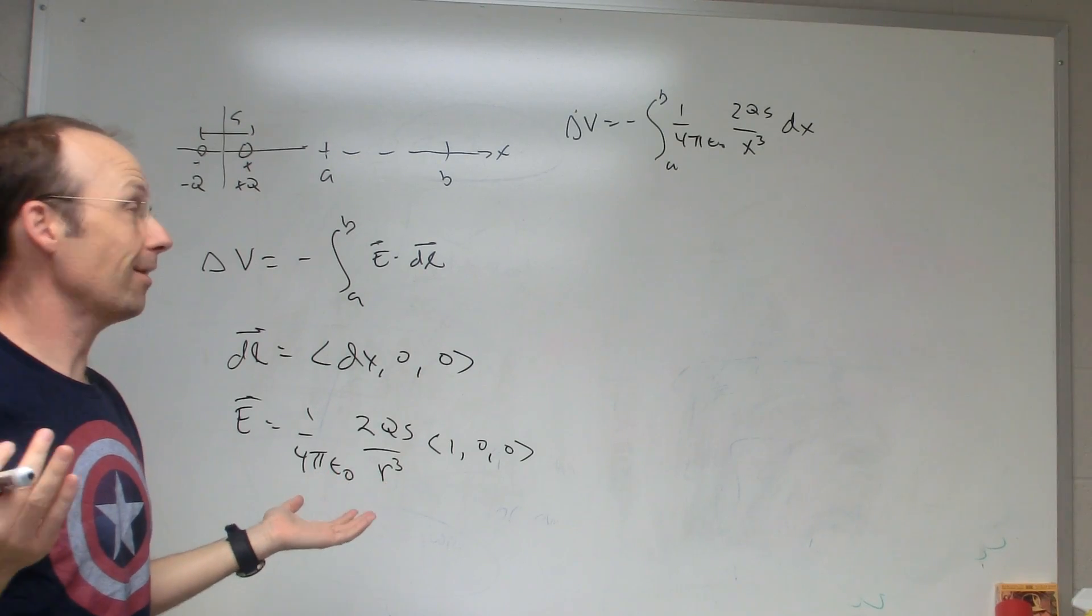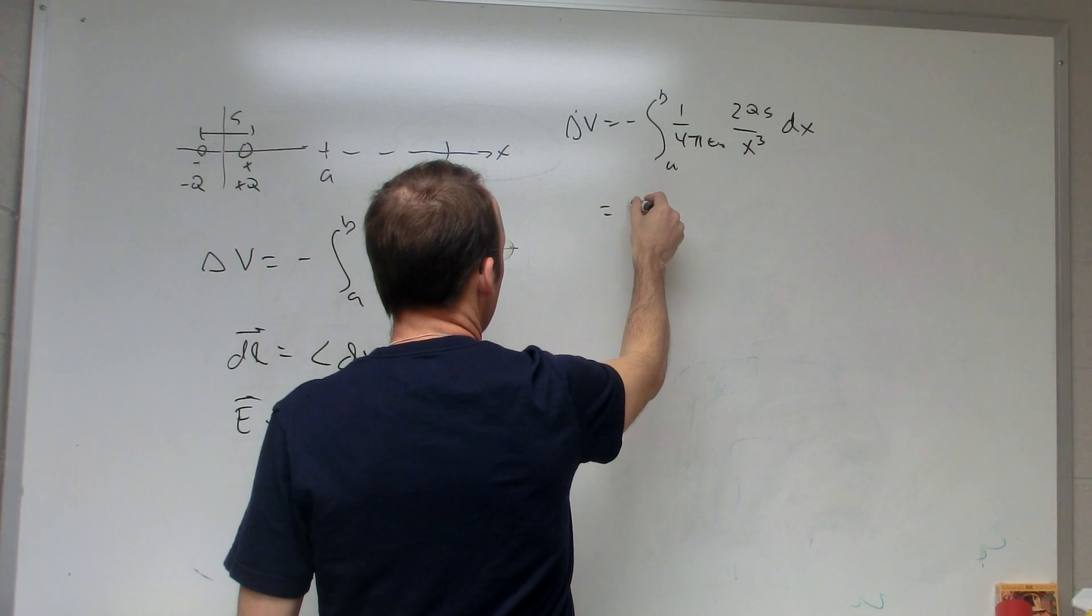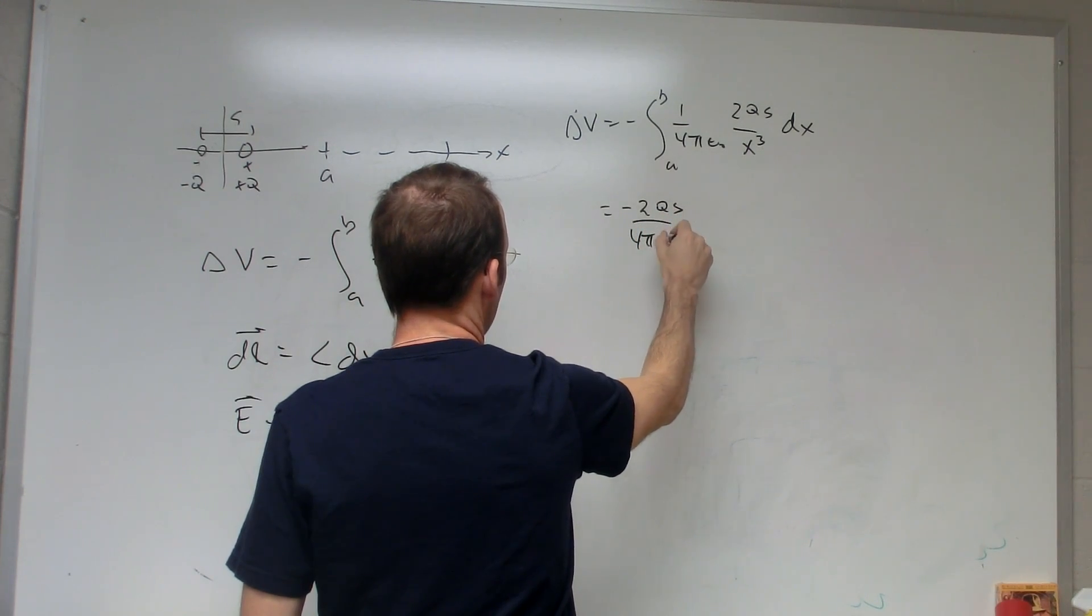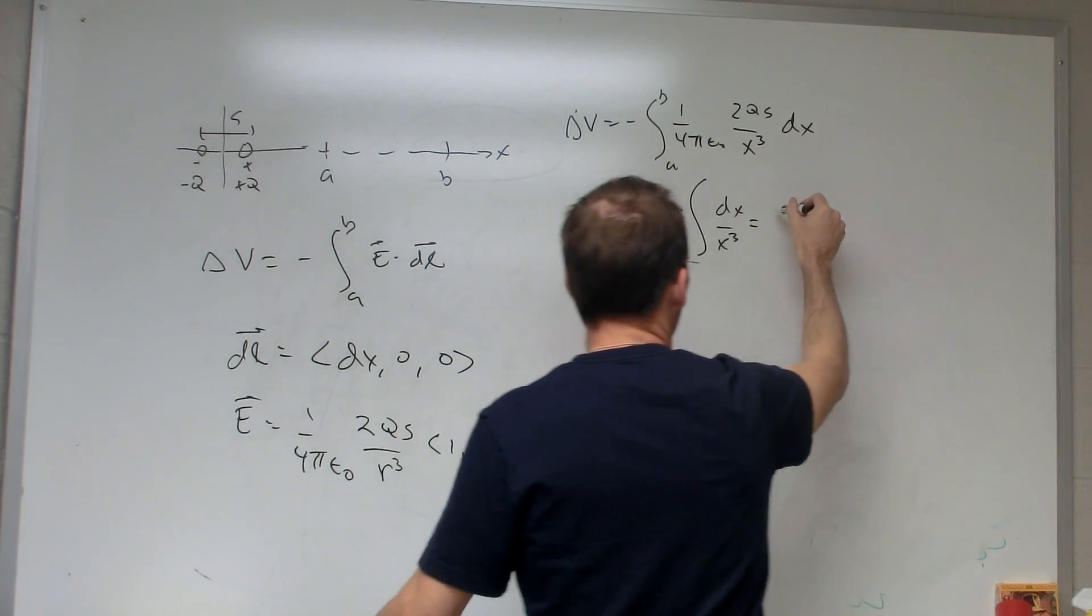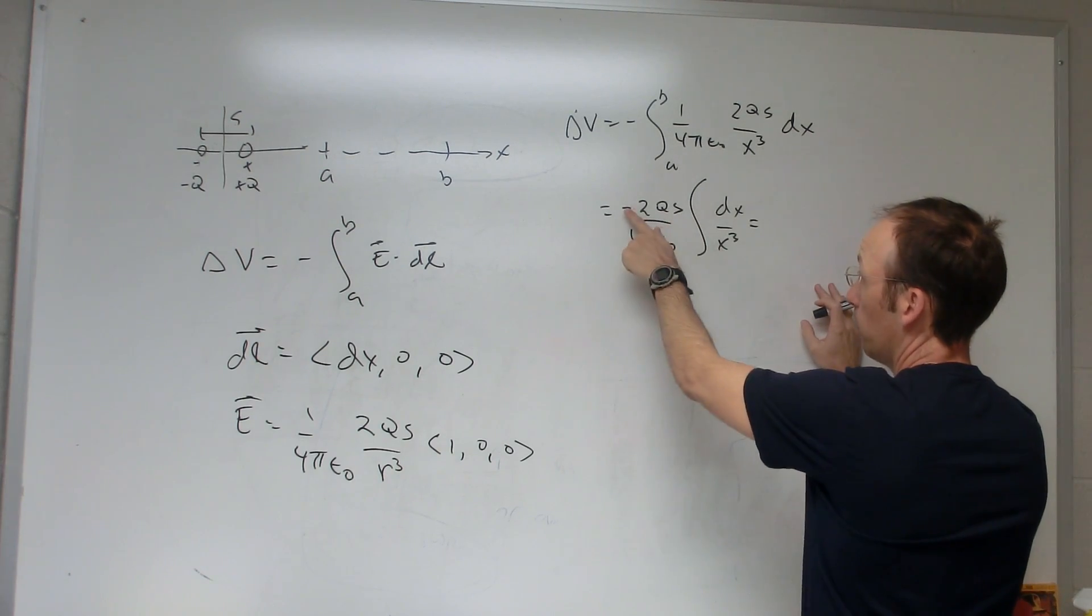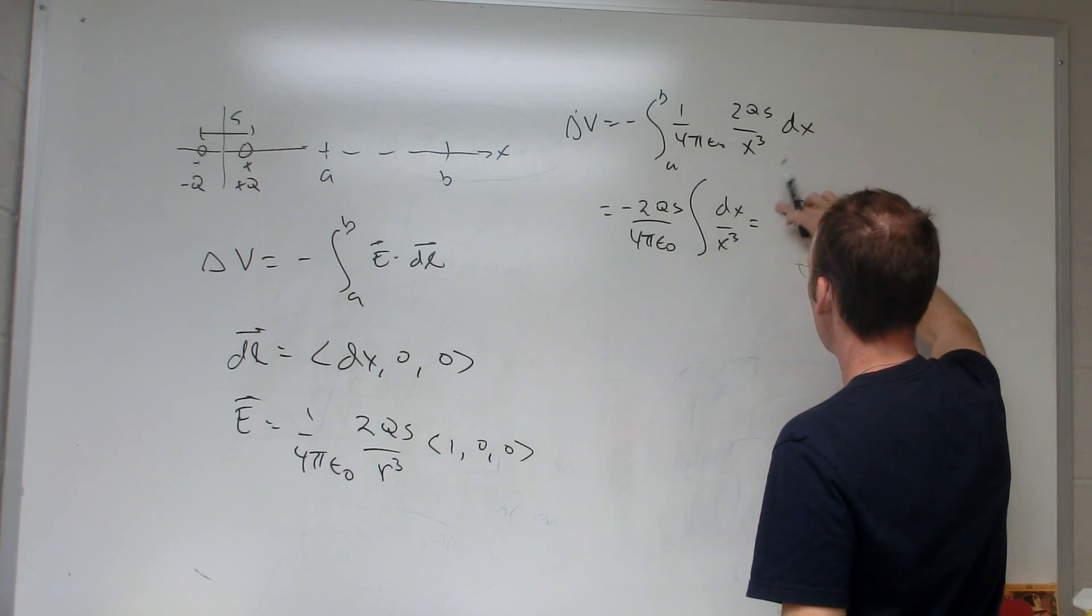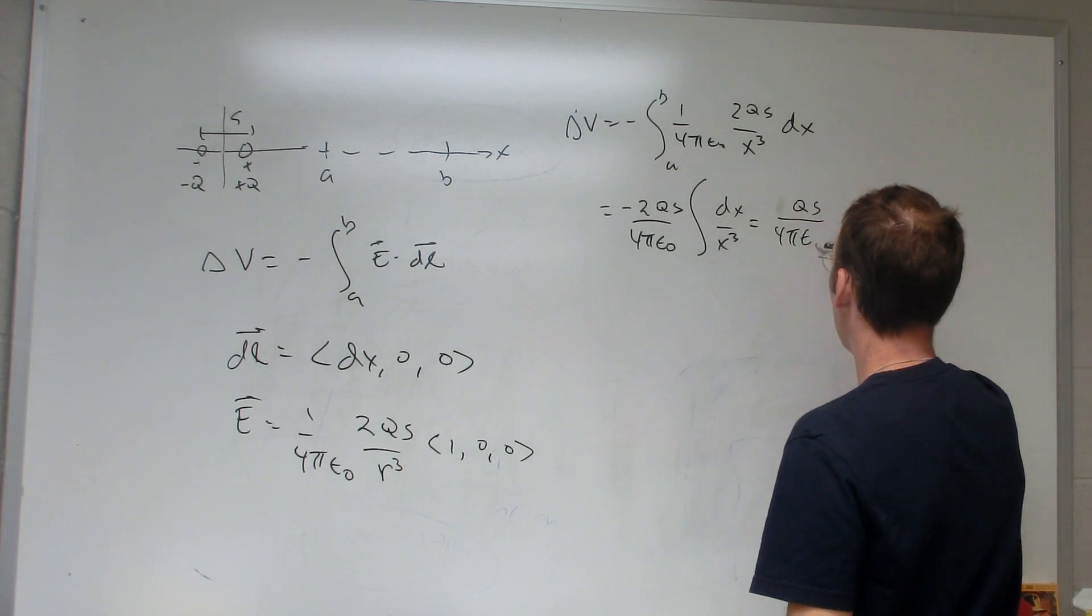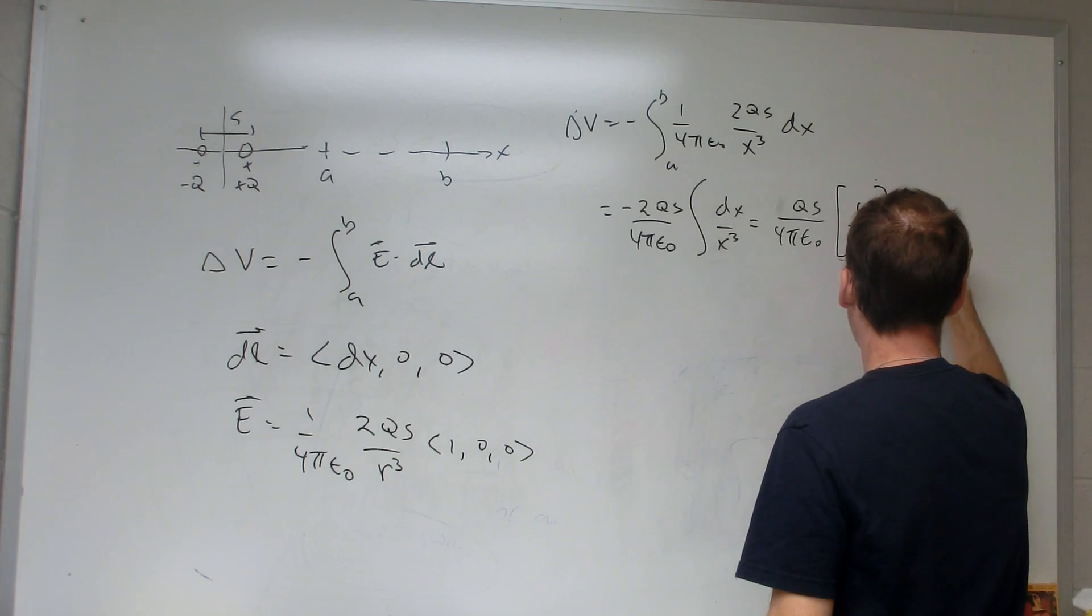So now all I have to do is integrate, and that's not so hard, right? Okay, so let's just pull out our constants. I get negative 2 Qs, none of that changes, 4 pi epsilon 0, the integral of dx over x cubed equals, I'm going to get a negative x, 1 over x squared, which is going to cancel with that. So let's write this as 2 Qs, and the 2s cancel too, because I'm getting another half. Qs 4 pi epsilon 0, and now I'm going to get 1 over x squared from a to b.